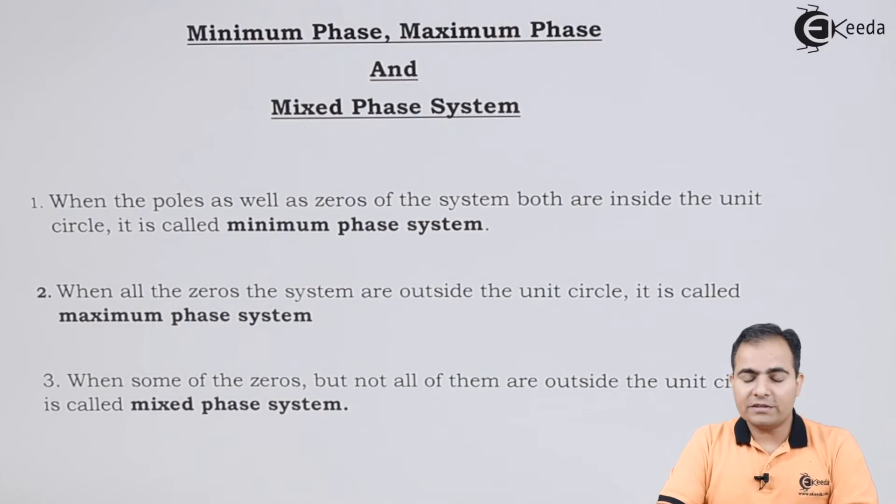In our function, we always have zeros and poles. Basically, poles are not that important in this type of system—the zeros matter a lot. If all these zeros are lying inside the unit circle, then the system is called a minimum phase system.